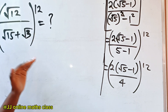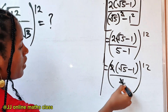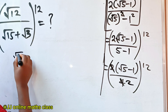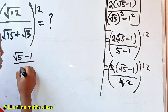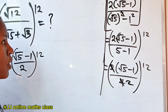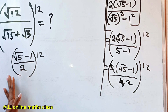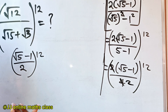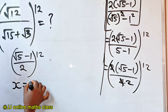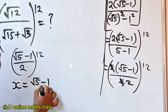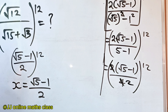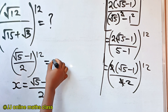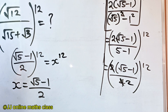Now at this point, two can divide four to give us two. So in summary we have root five minus one divided by two, raised to the power of 12. Whenever you see something in this form, to solve this, call whatever you have inside the bracket x. So let x equal root five minus one divided by two. That means this is equal to x to the power of 12.